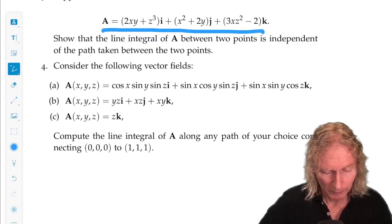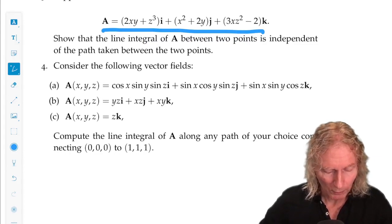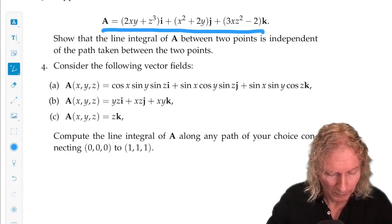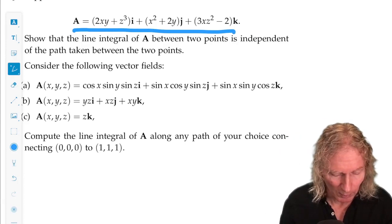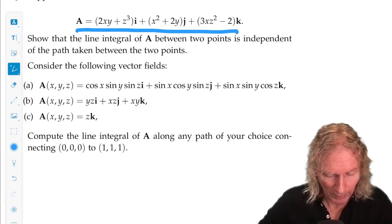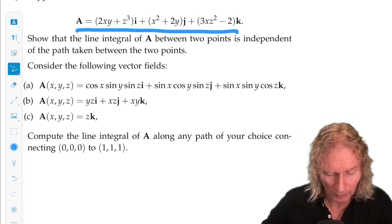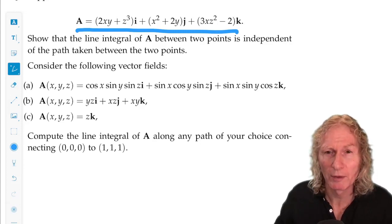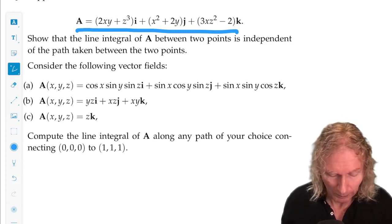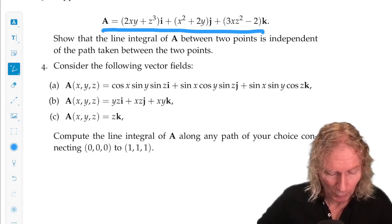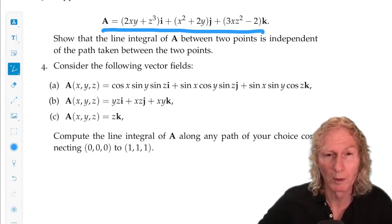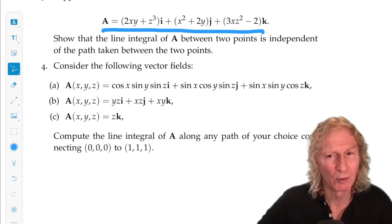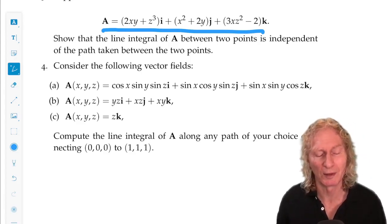In the last problem, I give you three different vector fields. And I say compute the line integral of that vector field, of each vector field, along any path of your choice connecting these two points, (0,0,0) to (1,1,1). All right. That's a dead giveaway in some sense. Hopefully you see it like that.